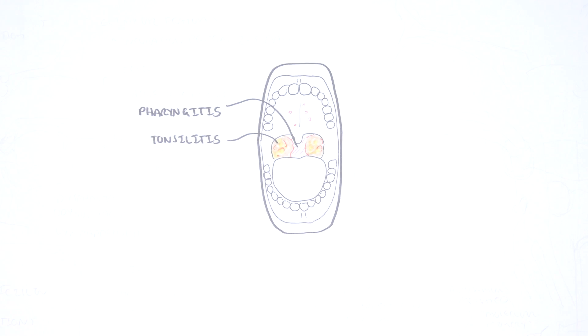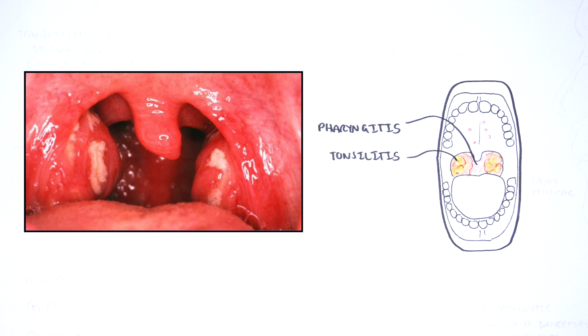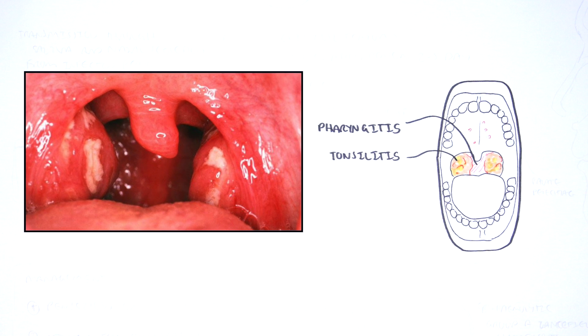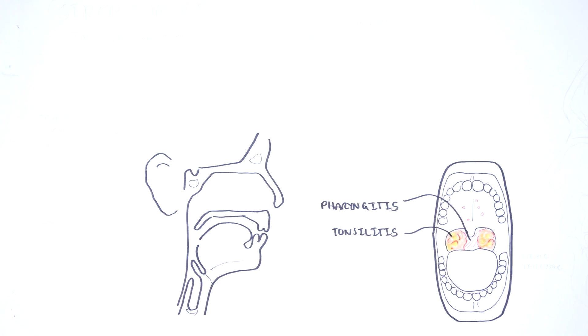Group A Streptococcus, also known as Streptococcus pyogenes, is the most common bacterial cause of acute tonsillitis. Here is a mouth with pharyngotonsillitis, inflammation of both the pharynx and the tonsils. Here is a photo of bacterial tonsillitis. Pharyngotonsillitis caused by Group A Streptococcus is sometimes referred to as strep throat.